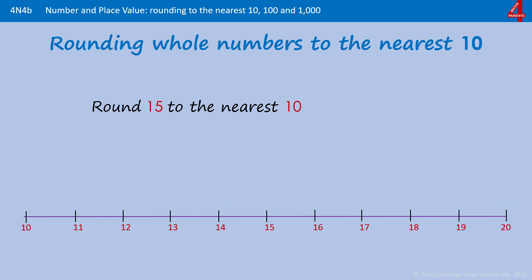15 isn't quite as obvious, but as long as you remember the rule it shouldn't cause any problems. You can see that 15 is an equal distance from 10 and 20. The rule with anything that has a 5 digit in the ones column is that we round it up to the next 10.